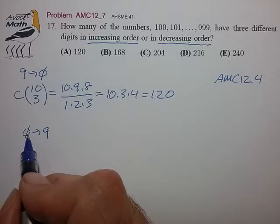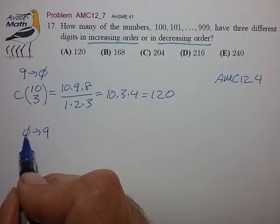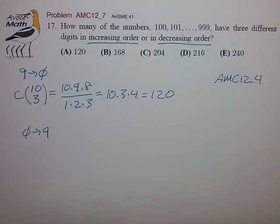because any way that we can possibly select a zero ends up forming an invalid three-digit number, because the zero when we arrange it in increasing order would be shifted to the left, and we don't allow for a zero leading digit in a three-digit number.